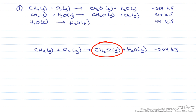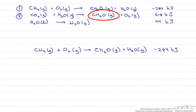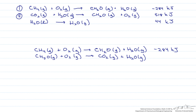However, we now have the intermediate CH2O that is not part of the reaction of interest, so we need to get rid of it. It needs to be on both the left and right side of the reaction so that it cancels out. Currently, in reaction two, CH2O is on the same side as in reaction one. However, we can't switch reaction one since the methane needs to be on the left. So let's reverse reaction two. Note that when we reverse the reaction, we have to reverse the sign, so the enthalpy of this reaction is now negative 518 kJ.